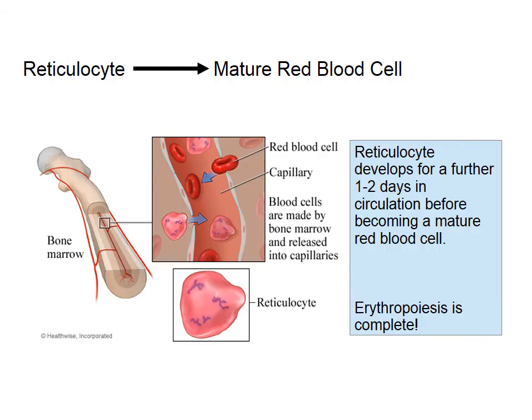So all of this has been occurring in the red bone marrow. However, the reticulocyte now passes from the red bone marrow to the blood. Here it develops further for about 1-2 days in circulation before becoming a mature red blood cell, and the process is complete.